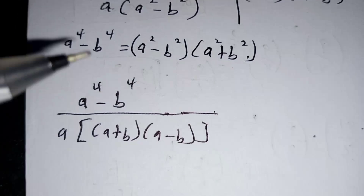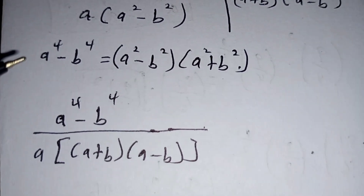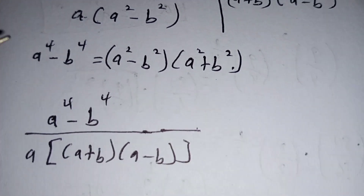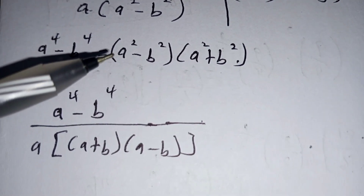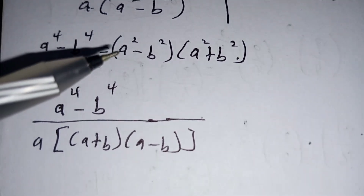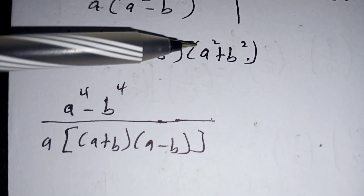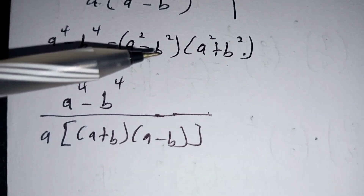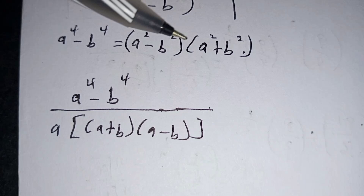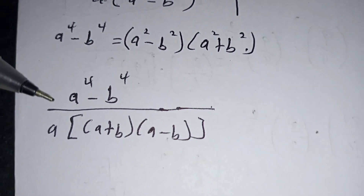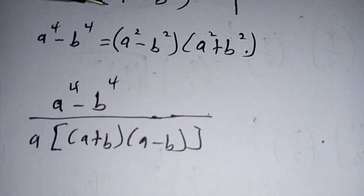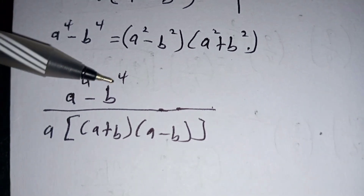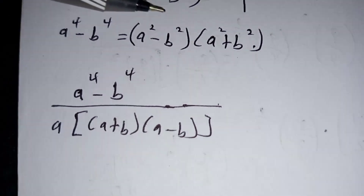Similarly, for a power 4 minus b power 4, we can make use of the difference of two squares identity. Since a power 2 times a power 2 equals a power 4, and b power 2 multiplied by b power 2 equals b power 4, we can transform a power 4 minus b power 4 in this form.